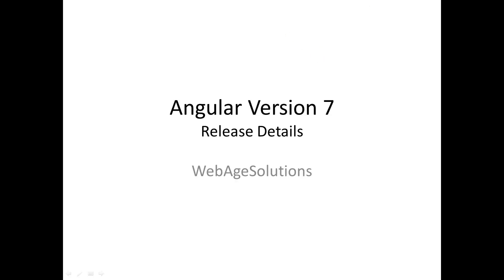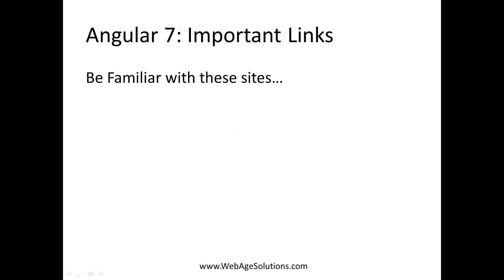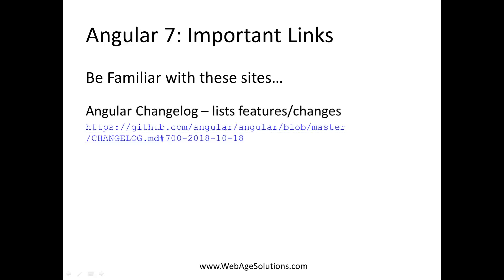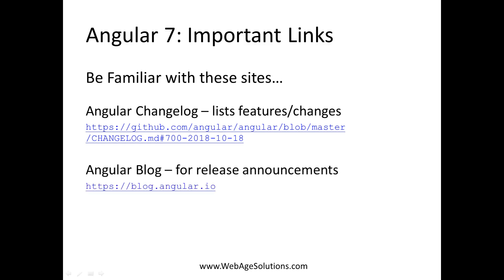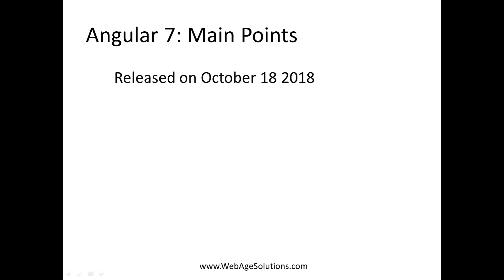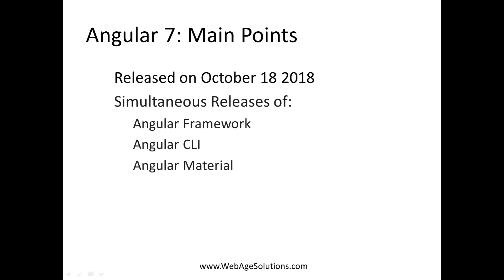Today we're going to be talking about the release of Angular version 7. Every time a new release of Angular comes out, there are a couple of sites you're going to want to take a look at. The first one is the Angular changelog, which lists features and changes from the point of view of the framework developers. Then, for a look at changes from the point of view of an application developer, you can take a look at the corresponding release announcement, which will appear on the Angular blog.